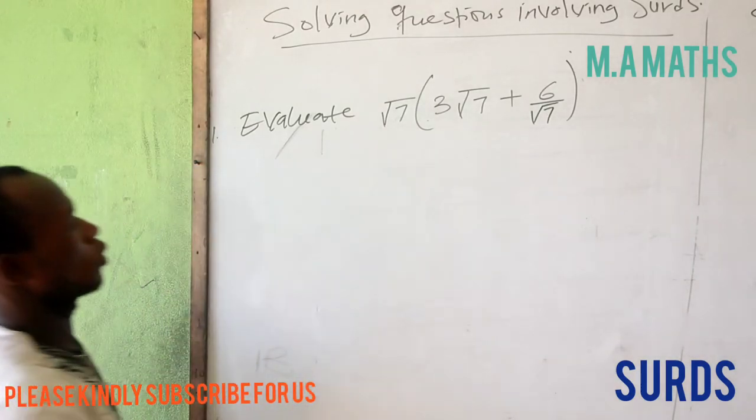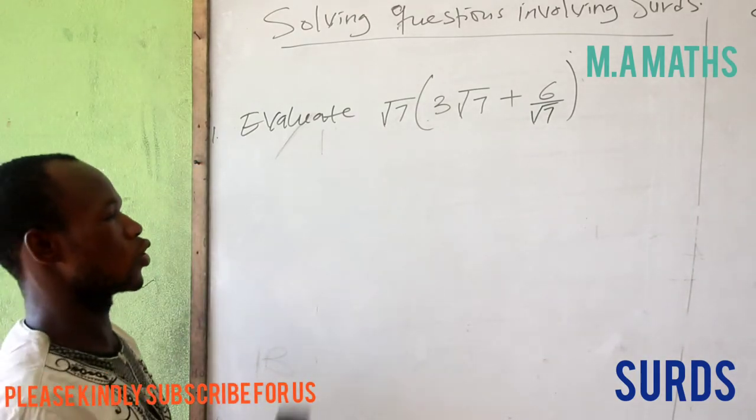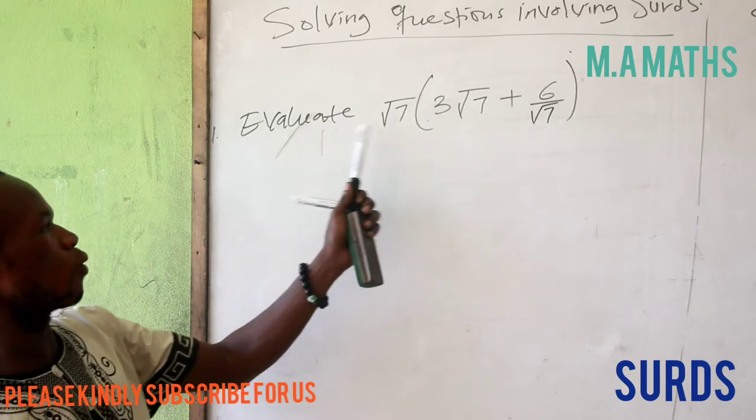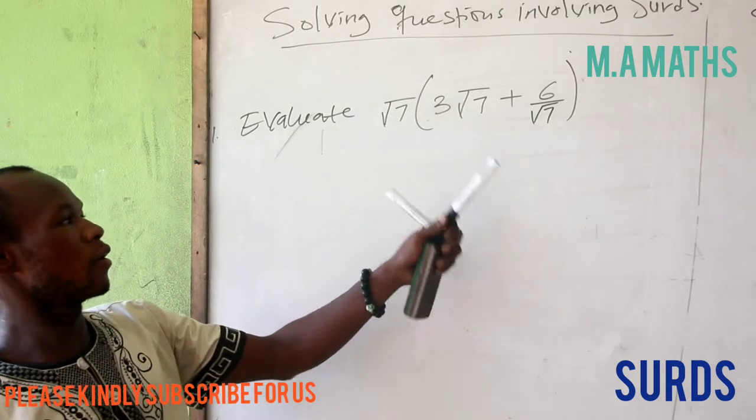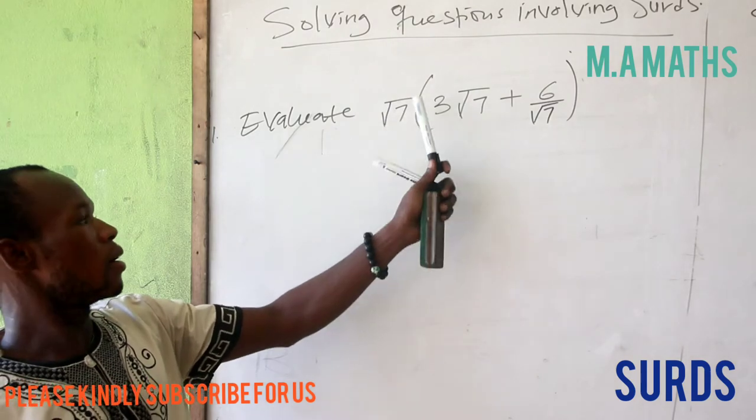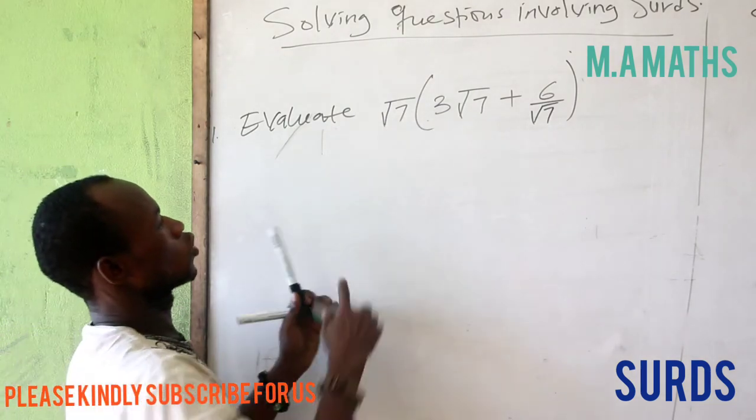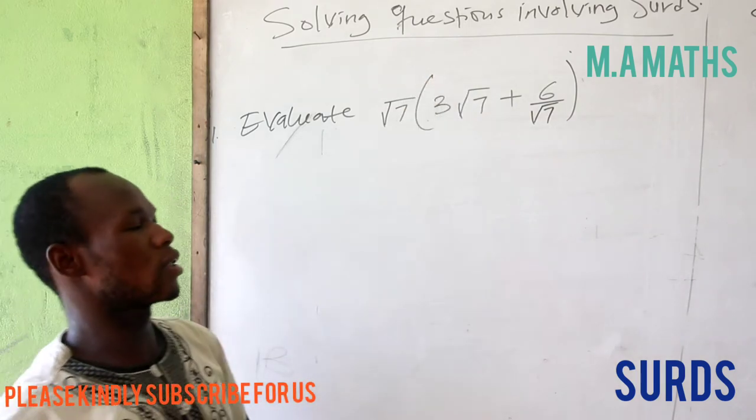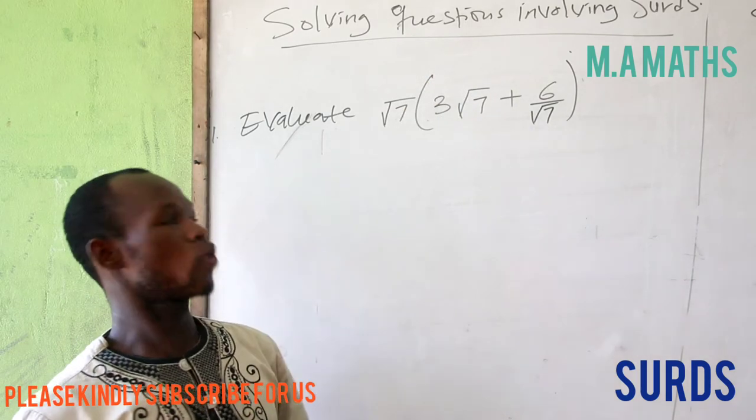We are going to look at this question. In this case, we are being asked to evaluate √7 times (3√7 + 6/√7).